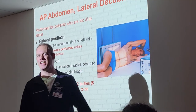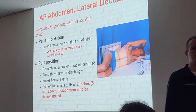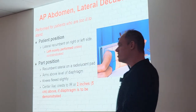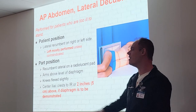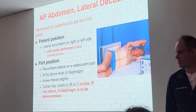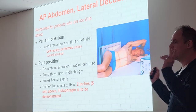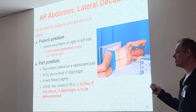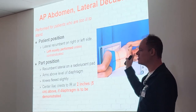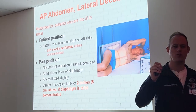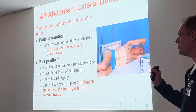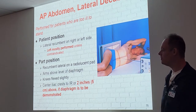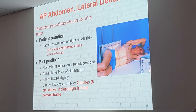AP abdomen lateral decubitus: we do this when the patient is too ill to stand or in too much pain. This is your alternative to an upright because we can still visualize free air and fluid levels in the abdomen. You will almost always — unless the doctor says otherwise — perform the left lateral only. People miss that. You must do a left lateral unless a doctor directly requests otherwise. That's optimal per curriculum and registry.